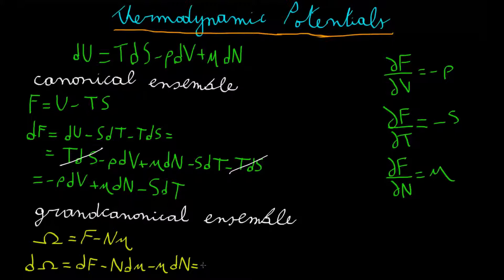And if we use the definition of dF, we obtain minus PdV plus mu dN minus SdT minus N d mu minus mu dN. Now, again, these two terms cancel each other out, and we are left with minus PdV minus SdT minus N d mu.